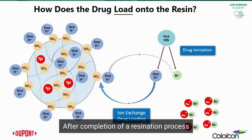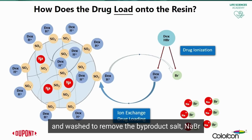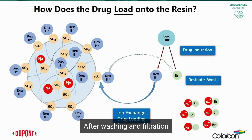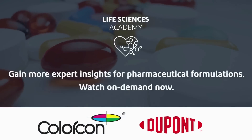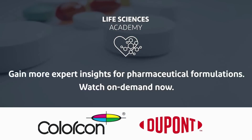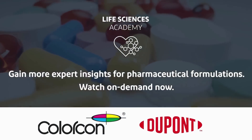After completion of the resination process, the resinate needs to be filtered and washed to remove the byproduct salt, sodium bromide. After washing and filtration, the resinate can be dried.